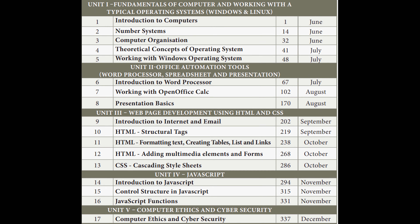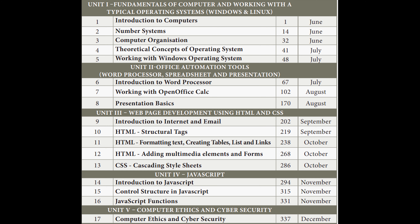This is your table of contents of this year. In grade 11, you are going to learn fundamentals of a computer and working with a typical operating system. And then you will be learning about office automation tools — word processor, spreadsheet and presentation. And then, you will be learning about web page development using HTML, CSS and JavaScript. And the last two chapters will be computer ethics and cyber security and Tamil computing.